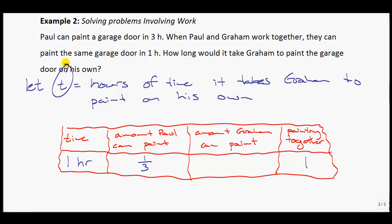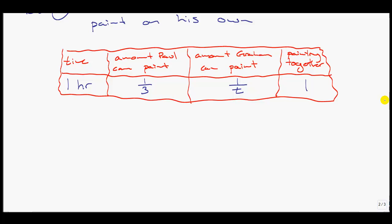But we don't know what Graham's going to be able to do in one hour. So I'm going to use this t variable. It's going to be one over t, just like Paul is one over three. We know that when Paul paints, he can do basically a third of a door in an hour. Graham's going to do some unknown portion. But when we add those two quantities together, that equals one full door in one hour.